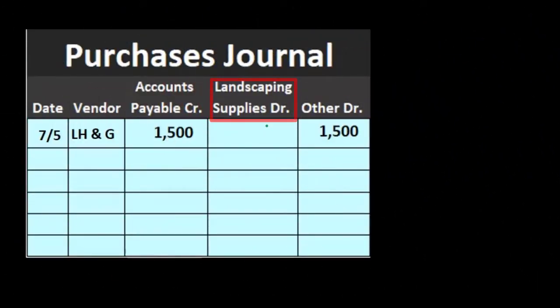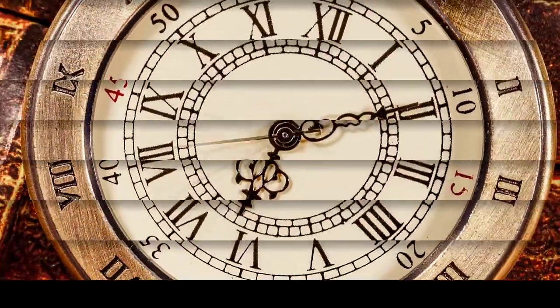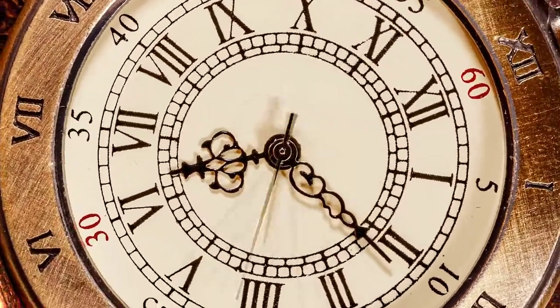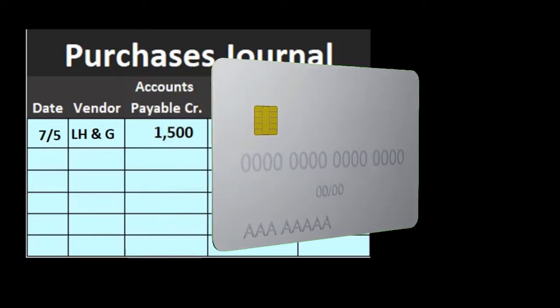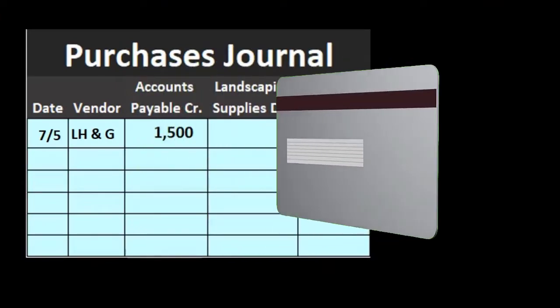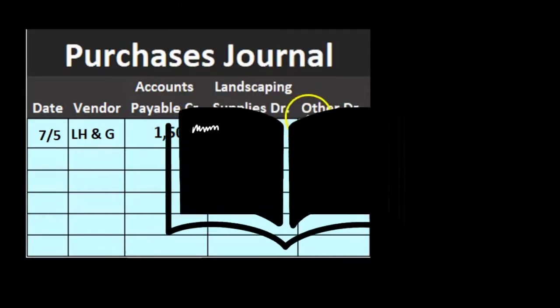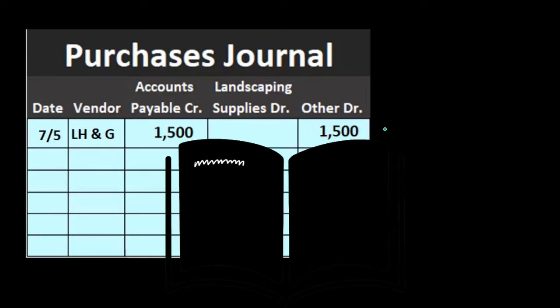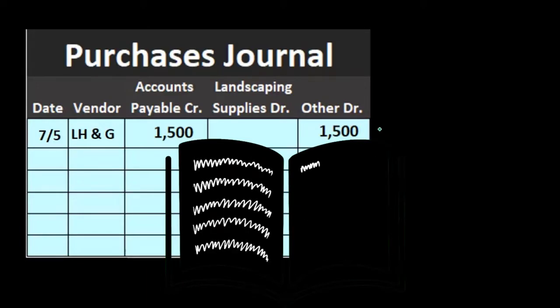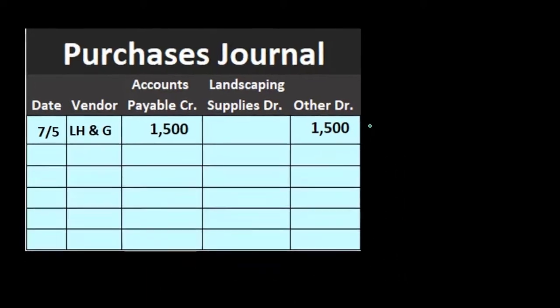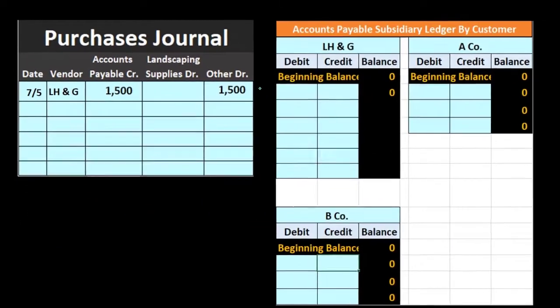There will be times when we make purchases on account for items that aren't the normal items — similar to a credit card purchase — and therefore we use the 'other' column. We decide how many columns to use and how to utilize the 'other' column, which must be broken out at the end of the time period once all transactions are recorded.